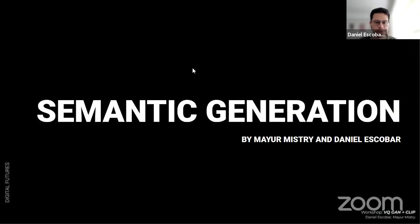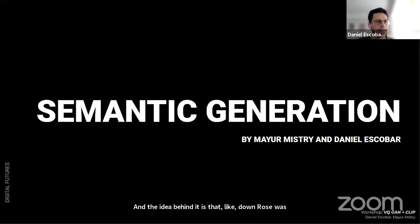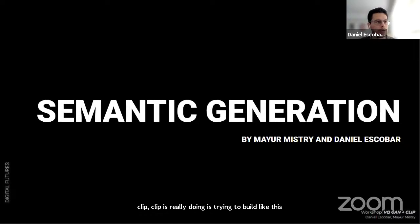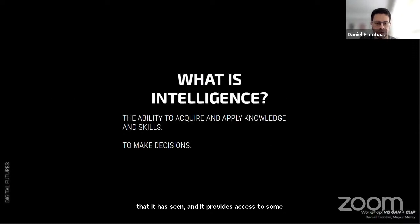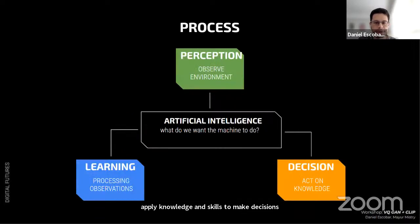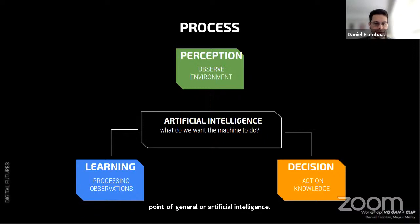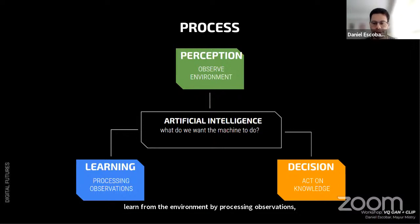The title for this next part is 'Semantic Generation.' The idea is that when you combine text and image with CLIP, what CLIP is really doing is building a mental map of all the things it has seen, providing access to the semantic meaning of what it can generate based on text. Intelligence is the ability to acquire and apply knowledge and skills to make decisions — and what we want AI to do, especially general artificial intelligence, is to observe the environment, learn from it by processing observations, and make decisions based on that knowledge.